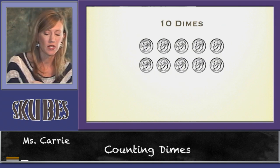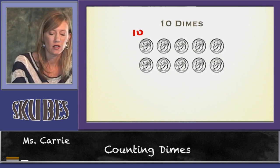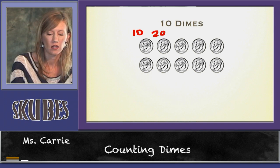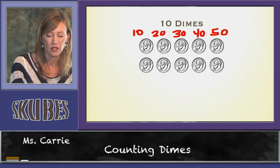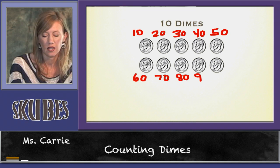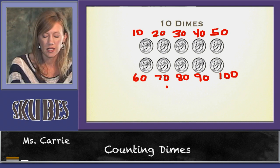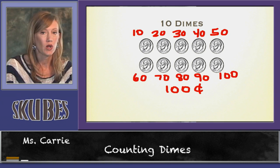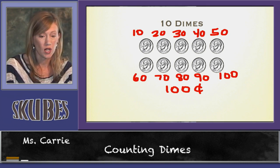Now let's look at ten dimes: ten, twenty, thirty, forty, fifty, sixty, seventy, eighty, ninety, one hundred. Ten dimes is equal to one hundred cents, but we don't write one hundred cents like that. We write it as one dollar, because one hundred cents is equal to one dollar.